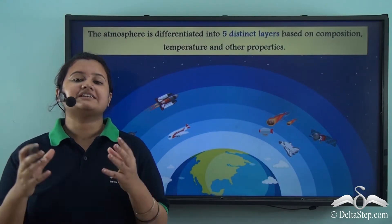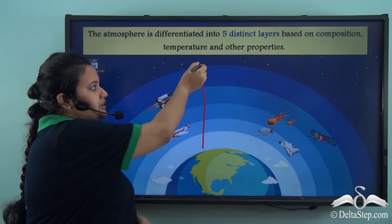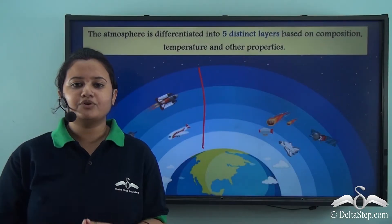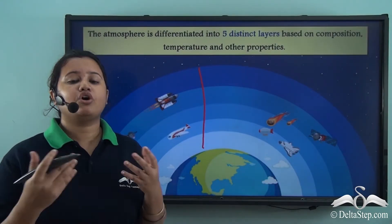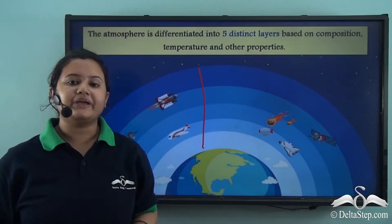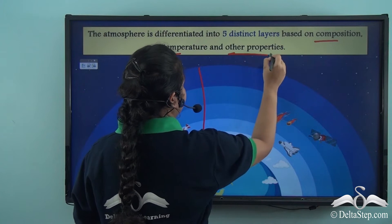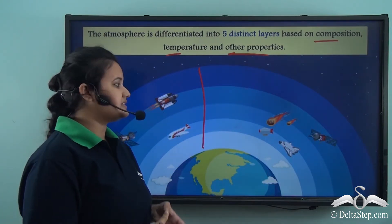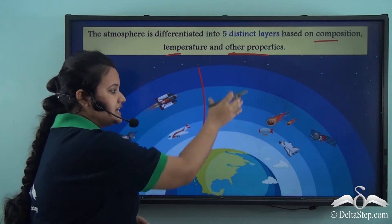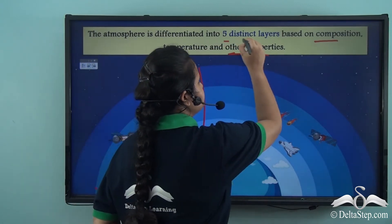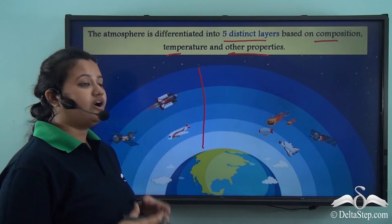The atmosphere is an invisible blanket of air that extends for several thousand kilometers above the earth's surface. This atmosphere is not uniform throughout — temperature, composition, and the proportion of gases varies as we move higher. Based on these factors, scientists have classified the entire atmosphere into five distinct layers that encircle the earth.